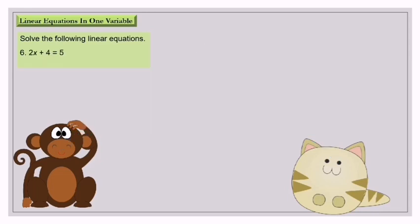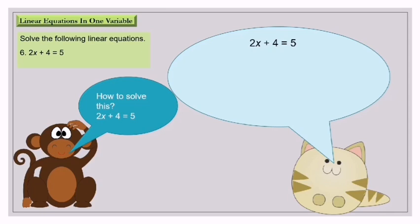Question number 6: 2s plus 4 equals 5. The opposite of plus is minus. So 2s equals 5 minus 4. 2s equals 1. There is no operation shown between 2 and s, so it is multiply. The opposite of multiply is divide. So s equals 1 over 2.